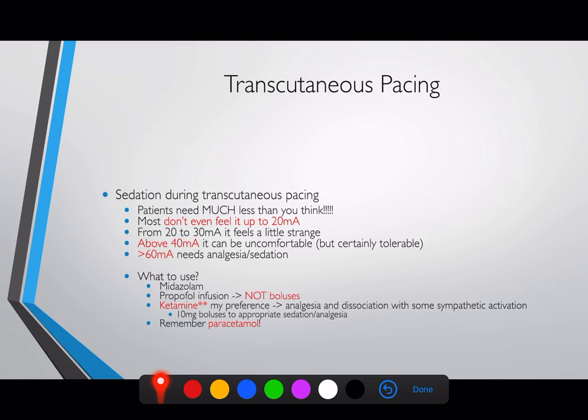My preference is ketamine. It has good analgesic effects, is a sedative, maintains laryngeal reflexes and ventilatory ability, and gives dissociation. Because of its sympathetic action it may even help maximise adrenaline release. I give 10 milligram boluses up to about 50 milligrams for analgesia — above 50 you're entering the sedative realm. If failing with ketamine I move to propofol, and I have a very low threshold for intubating these patients to allow transvenous pacing to be placed, since transcutaneous pacing is always a temporary measure.